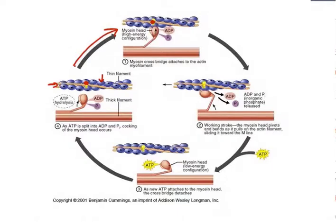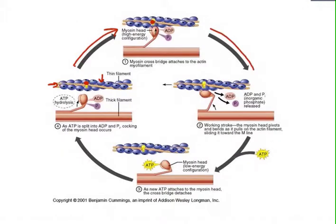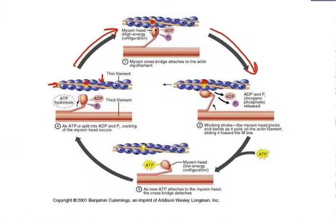When the ADP and the phosphate are bound to the myosin and the myosin head is bound to the myosin binding site, it's considered a high energy configuration. Then, as you see in the next stage, the myosin head will be making its move — the power stroke — releasing the ADP and the phosphate group.